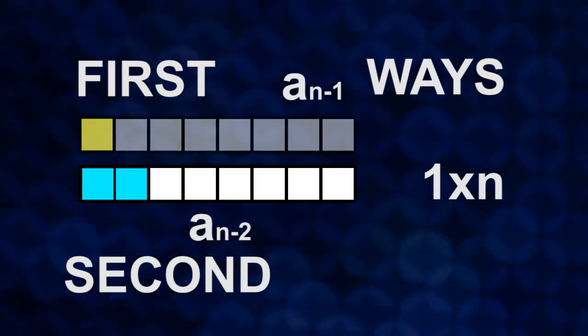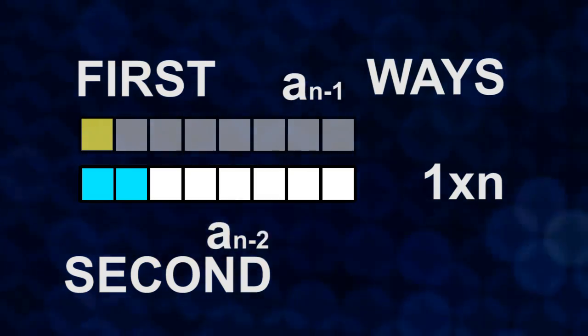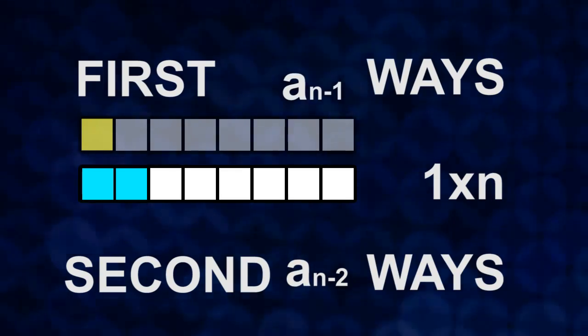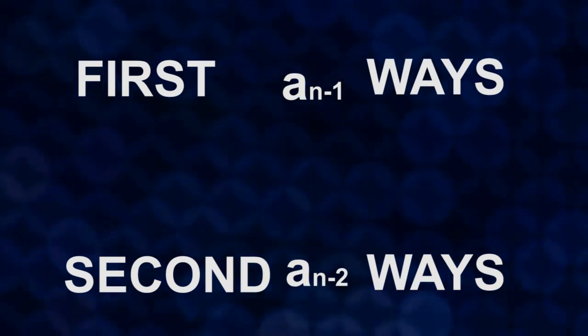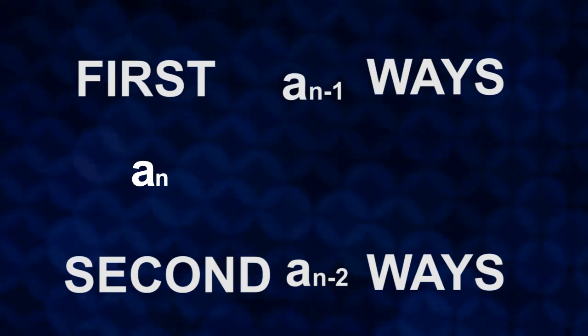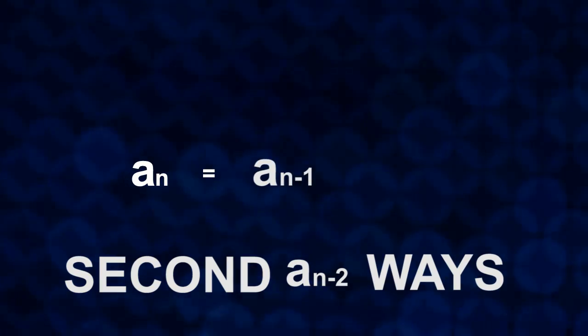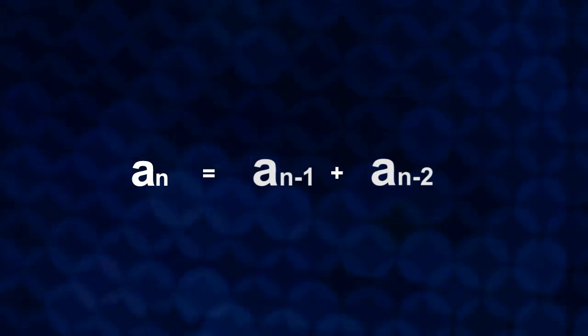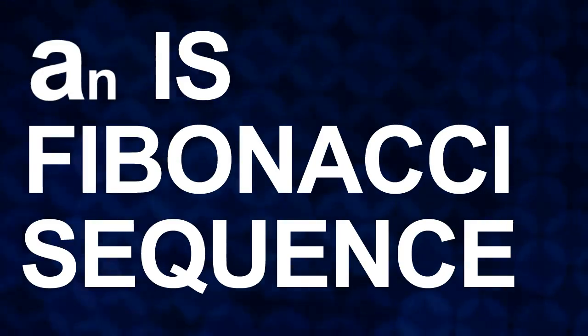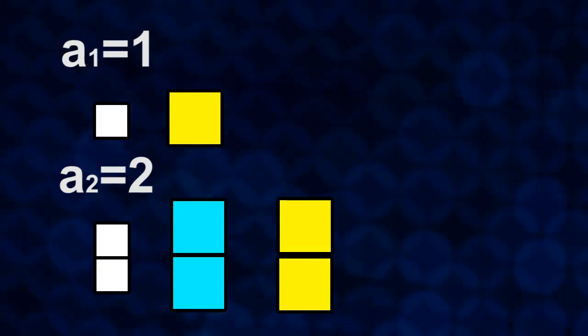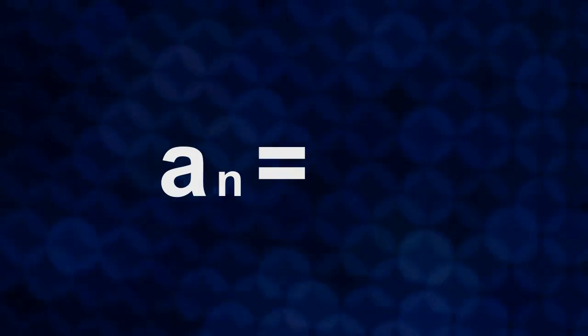Therefore, there are a n-2 ways. Therefore, the result is a n is equal to a n-1 plus a n-2. So, a n is Fibonacci sequence with a1 is equal to 1 and a2 is equal to 2, which means that a n is equal to this.